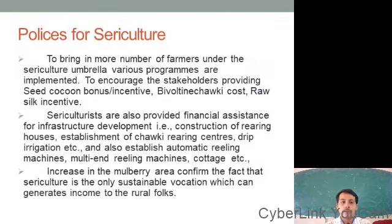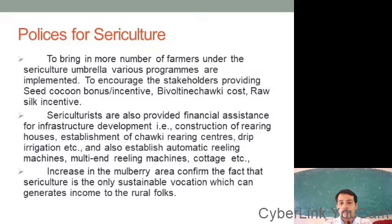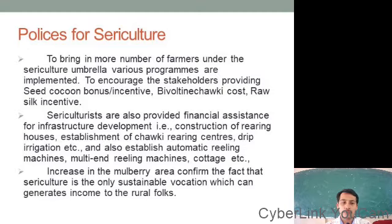To bring more farmers under the sericulture umbrella, various programs are implemented by our state and central governments to encourage stakeholders, providing seed cocoon bonuses, incentives, chowki costs, raw material support, and raw silk incentives. These include incentives for mulberry cultivation, cocoon production, and infrastructural development. Sericulturists are also provided financial assistance for infrastructure development — including construction of rearing houses, establishment of chowki rearing centers, and drip irrigation.